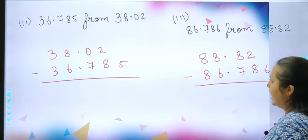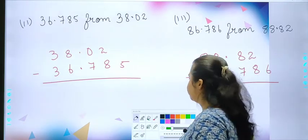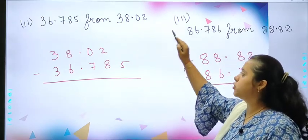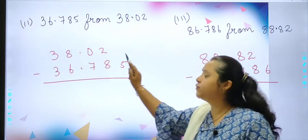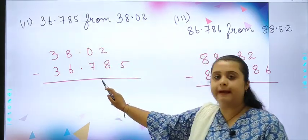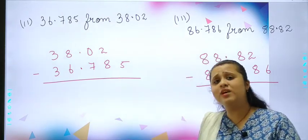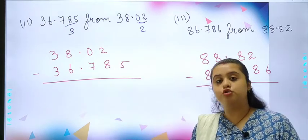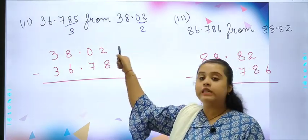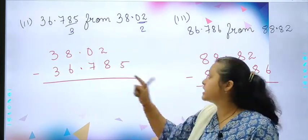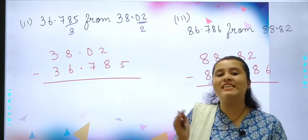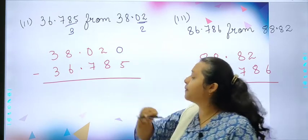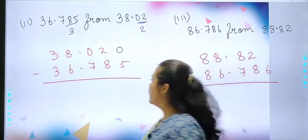Second and third. Let's start with this. The second question is 36.785 from 38.02. So as you know, from ke baad wala term will be coming first. As you can see in the question, here 2 decimal places are there and here 3 decimal places are there. So we will be making the 2 decimal places into 3 by simply adding 0. Clear. Let's start with this.